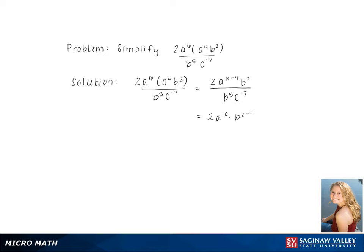We then add the exponents of a and subtract the exponents of b, while bringing c to the negative 7 to the top of the fraction to make the exponent positive.